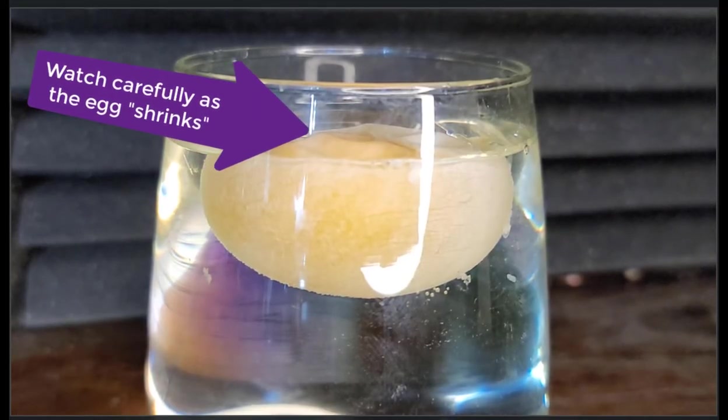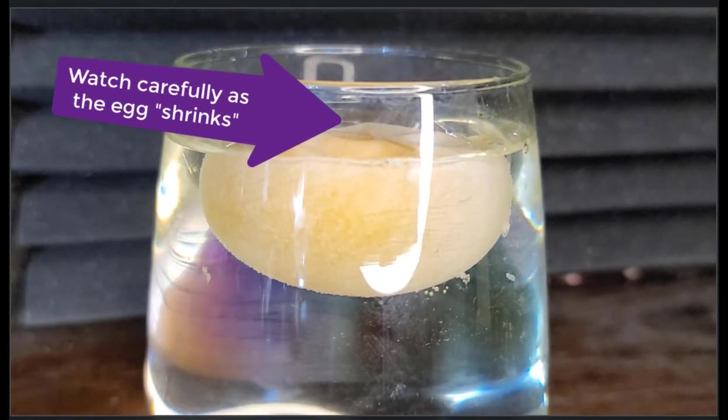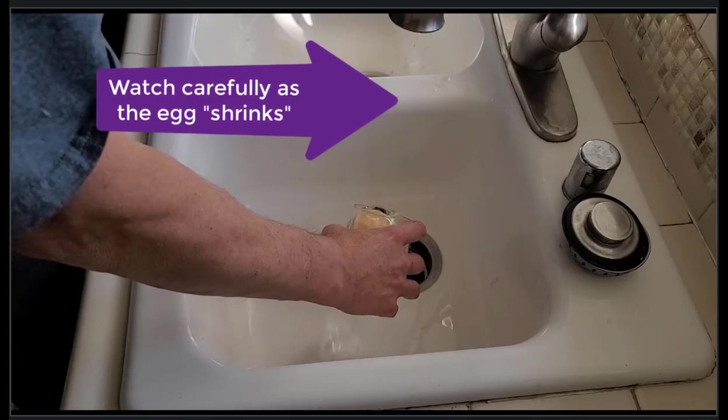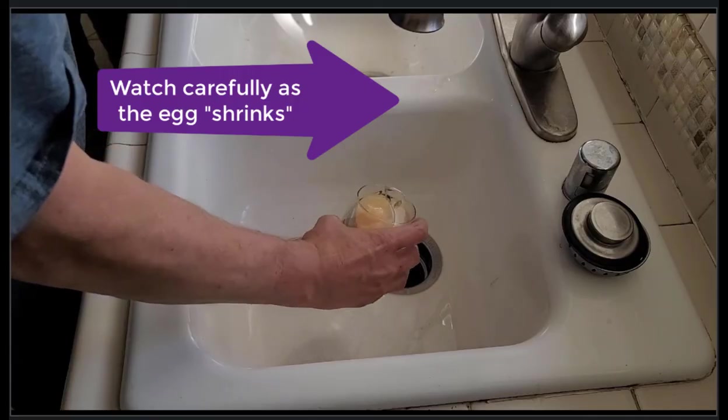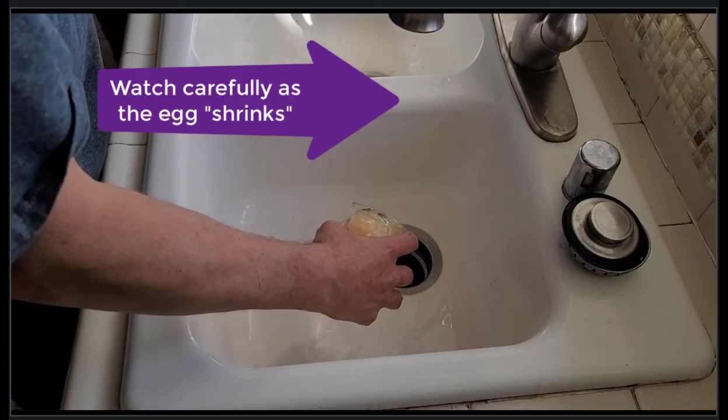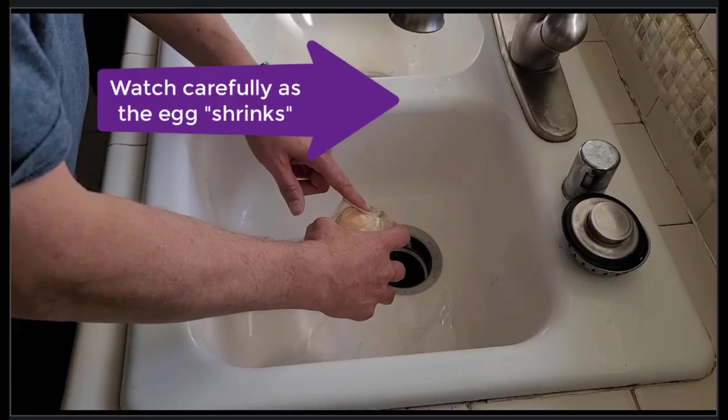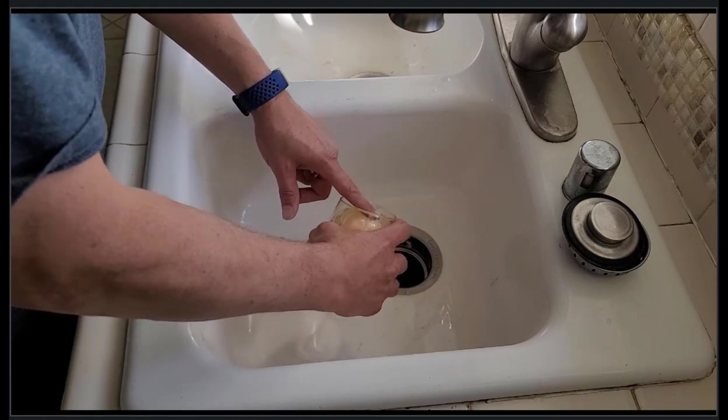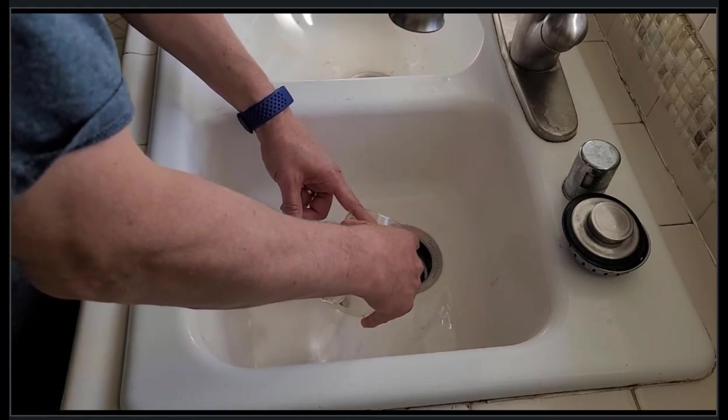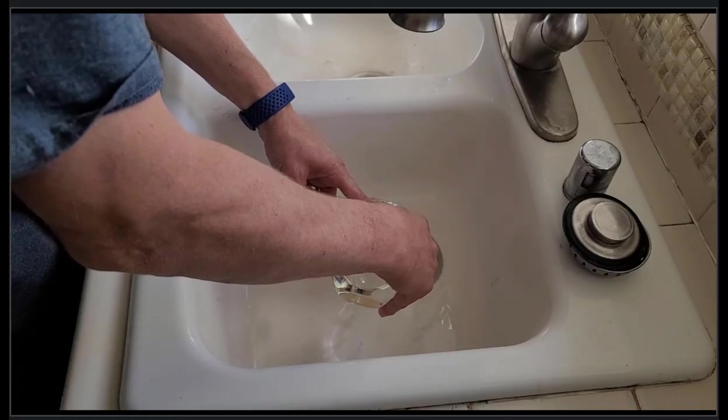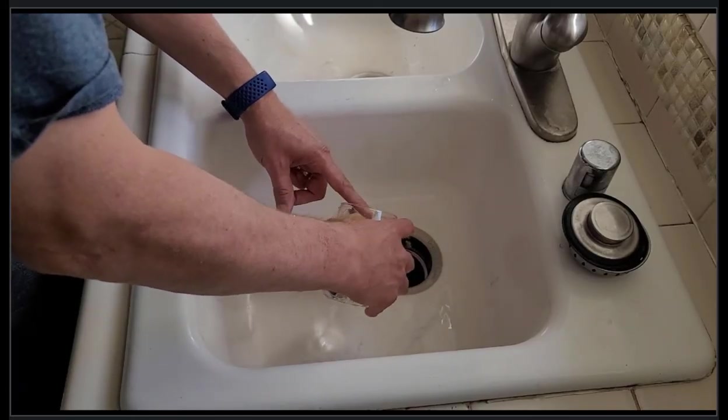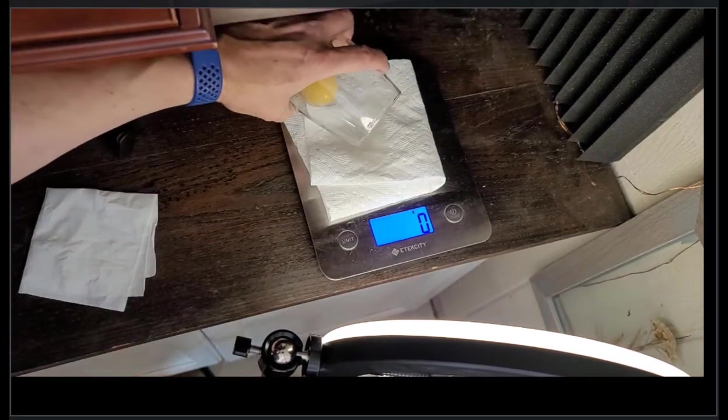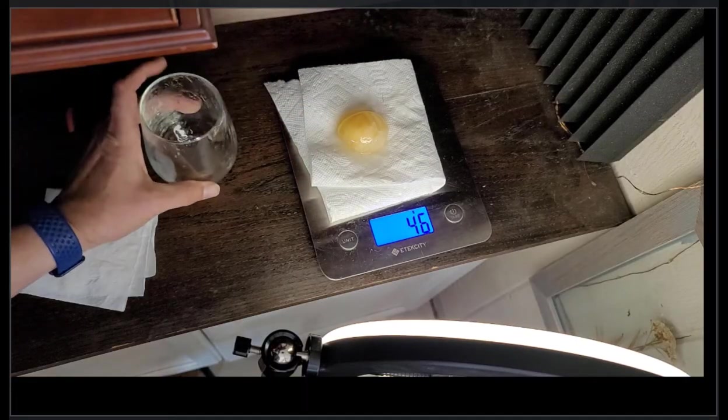Once again, I'm going to drain the corn syrup in the sink and then I'm going to re-weigh my egg like I've done for the previous portions of the experiment. When I re-weigh my egg, I notice that it's down to 46 grams. So it has lost weight since the last measurement.